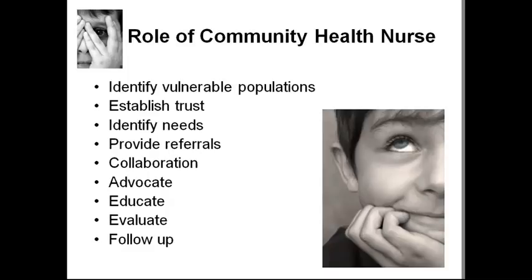The primary nursing interventions for community health nursing include working to improve living conditions in shelters, reducing exposure to communicable diseases, enhancing hygiene to eliminate parasitic skin conditions like lice and scabies, and immunizations like flu, hepatitis B, and pneumonia. Secondary interventions include screening and referral for both acute and chronic health conditions, and tertiary interventions include management of chronic mental health and physical problems.